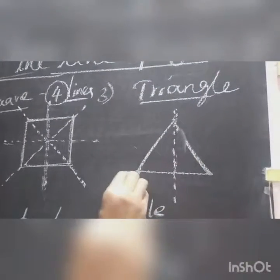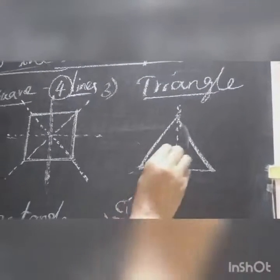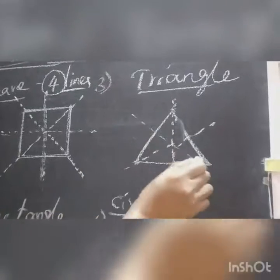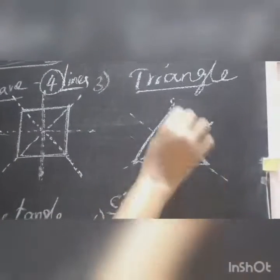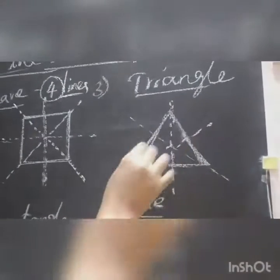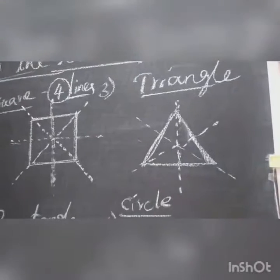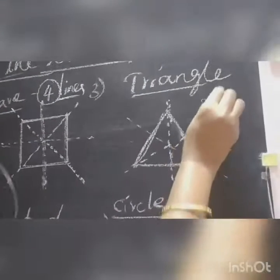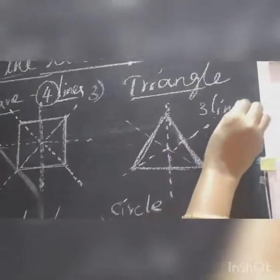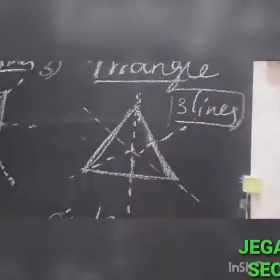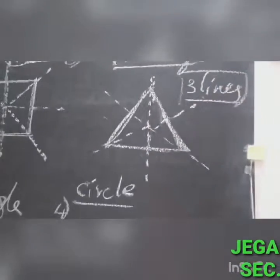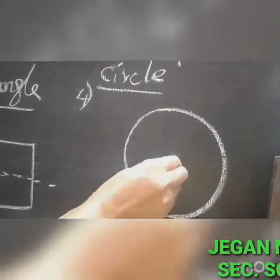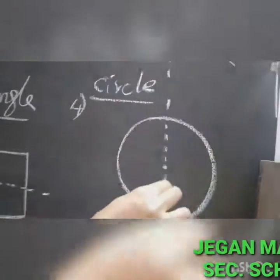The third picture is an equilateral triangle. You can divide it along each side. The number of equal sides is three for an equilateral triangle, so we have three lines of symmetry.